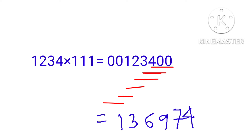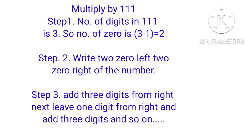Now add three digits at a time from the right: 0 plus 0 plus 4 equals 4. Leave one digit, so 0 plus 4 plus 3 equals 7. Then 4 plus 3 plus 2 equals 9. Then 3 plus 2 plus 1 equals 6. Then 2 plus 1 plus 0 equals 3. Then 1 plus 0 plus 0 equals 1. So the answer is 136974.